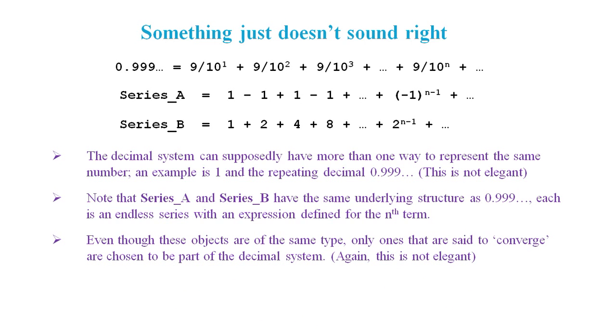Even though these objects are of the same type, only ones that are said to converge are chosen to be part of the decimal system. Again, this is far from elegant. A well-defined solution that supports a structure like 0.9 recurring should support all objects of that same fundamental type. It shouldn't matter if the terms in a series are getting smaller or not. It's the underlying mathematical structure that matters, not the numbers and expressions that happen to be in the structure.